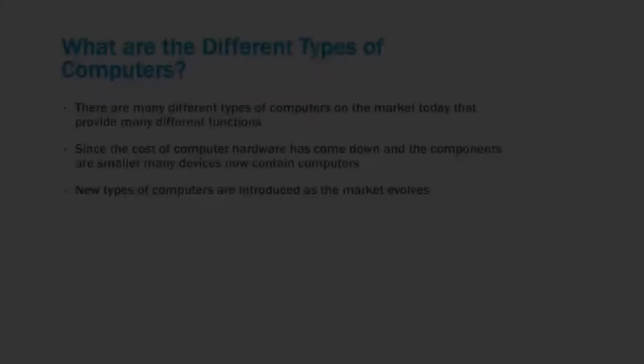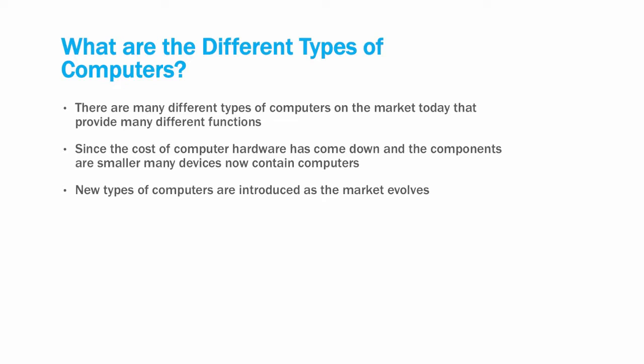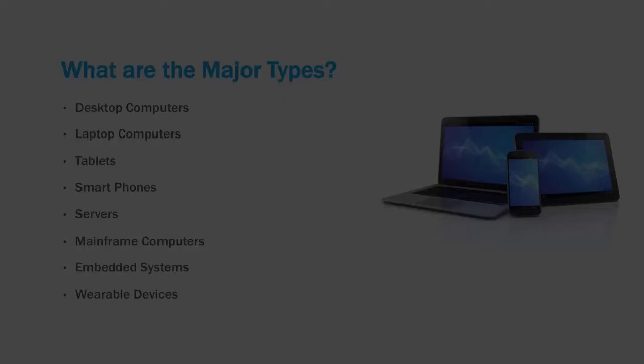Today, there are a large number of computers in use, but they generally fall into a few categories. Since the cost of computer hardware has come down significantly and the size of the components is much smaller, it's much easier to include computers in devices that were unable to take advantage of this capability just a few years ago. As this trend continues, more devices are being frequently introduced into the market. So with all these different types of devices, let's look and see what the major device types are.